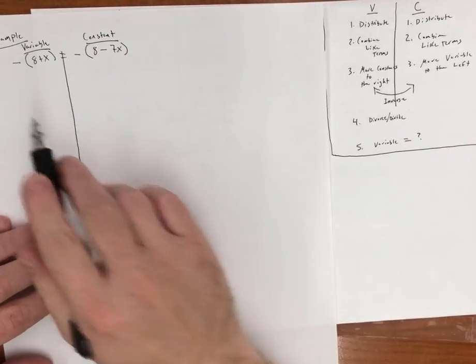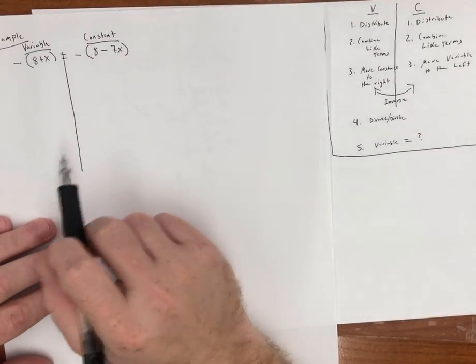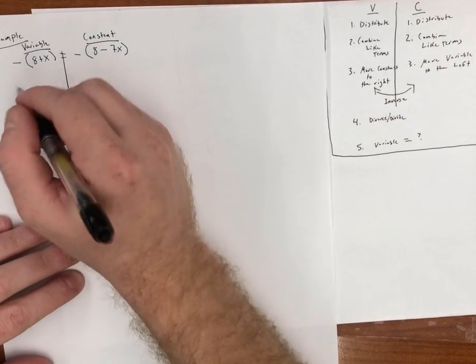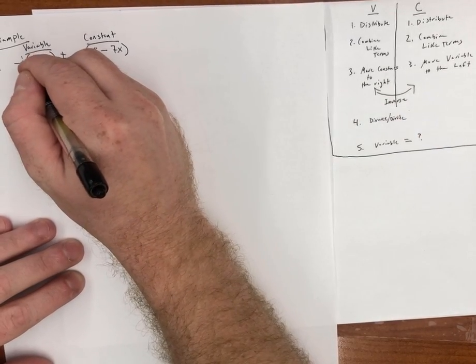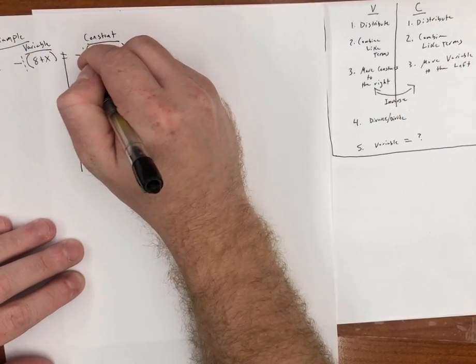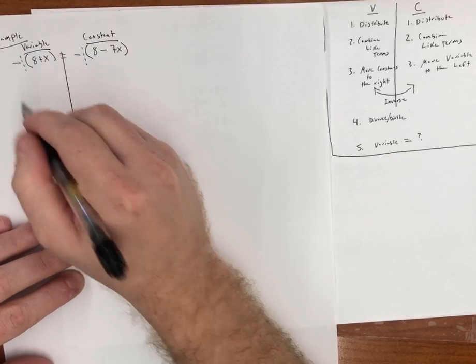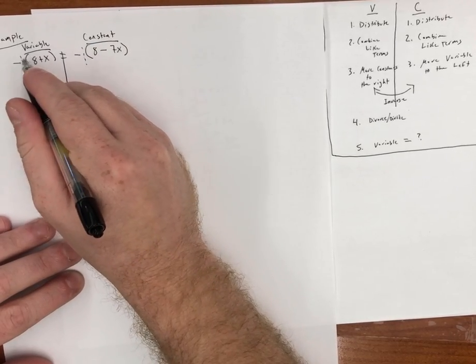Now that we've done that, the first step that we have to do on the left side, variable side, we have to distribute. So the negative, remember there's an imaginary one here. I'm just going to go ahead and label both sides. There's an imaginary one, so we have to take this negative one, and we have to distribute it out.